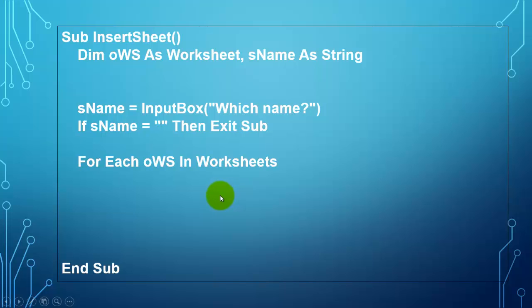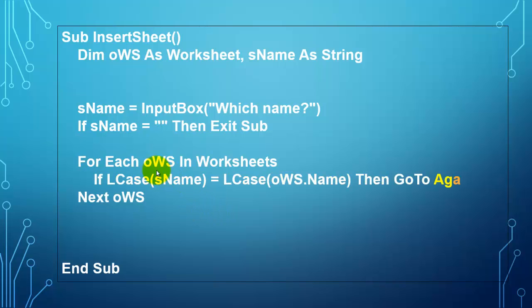We look for all the worksheets. Imagine that someone assigns a name that exists already. Nowadays you can have an unlimited amount of sheets and you don't remember all the names. So we have to look for all the sheets to make sure that that name does not exist. So if sName happens to be the same as the name of the first worksheet, the second one, the third one, etc., etc., etc., then we go somewhere else.